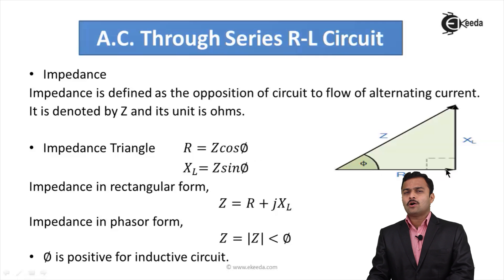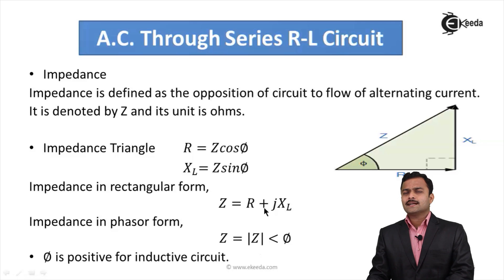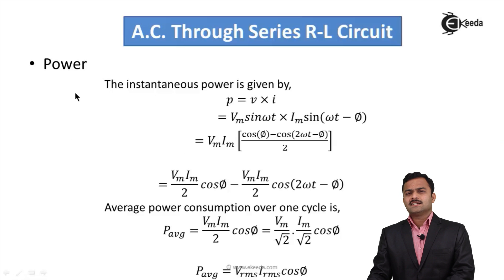Impedance in rectangular form is Z = R + jXL, confirming that Z is a complex term. In phasor form, Z = |Z|∠φ, where |Z| = √(R² + XL²) is the magnitude and φ is the angle made by impedance with the positive x-axis in the anti-clockwise direction. For an inductive circuit, the phase angle of impedance is always positive.